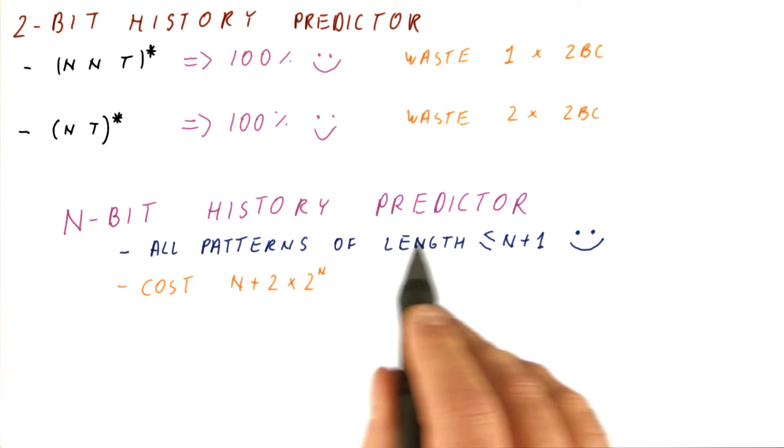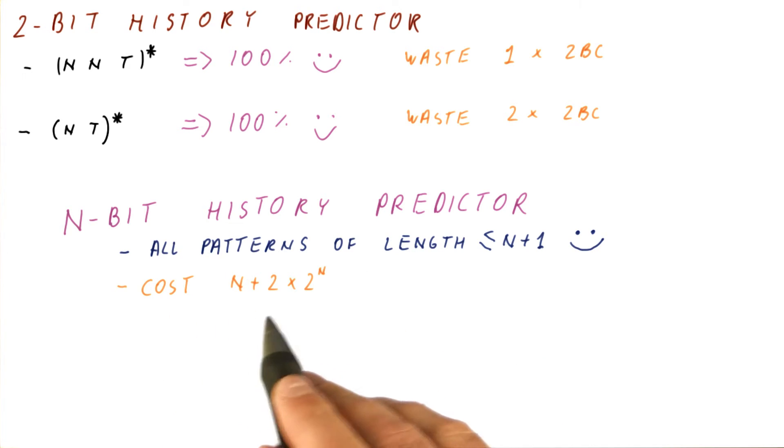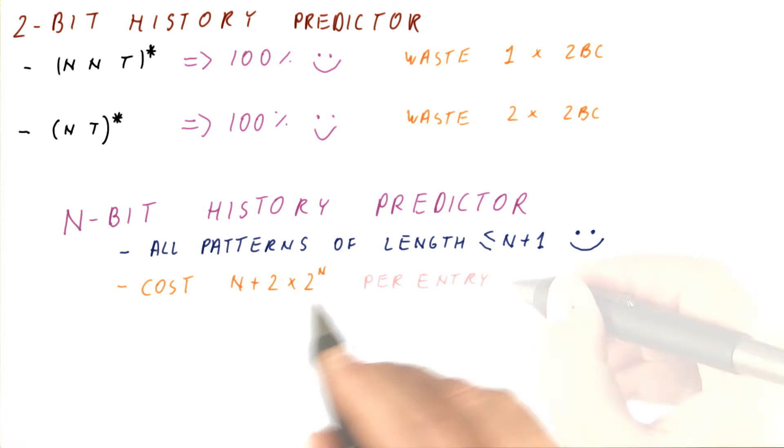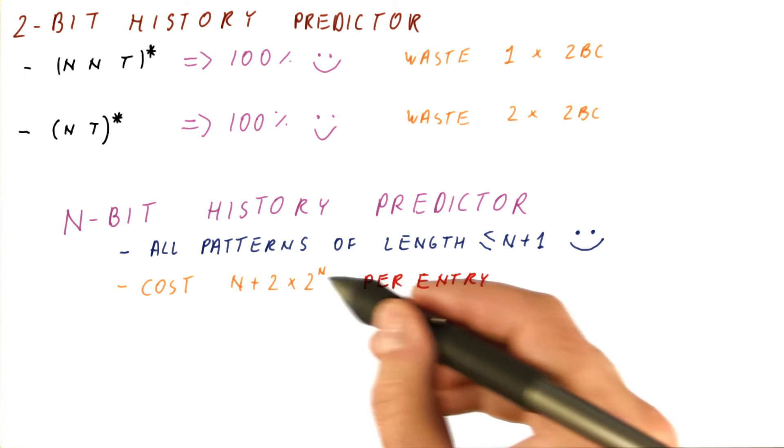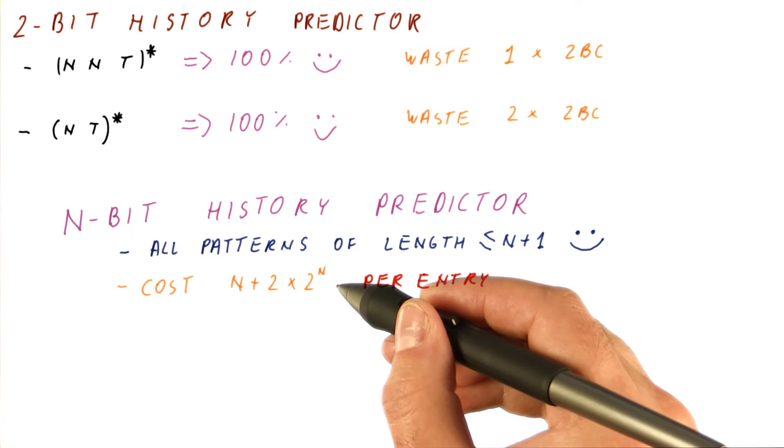However, the n-bit history predictor will cost us the n bits of history plus 2 to the nth two-bit counters per entry. Each branch will have an entry that we index into that will be of this size. So the entries become very large.